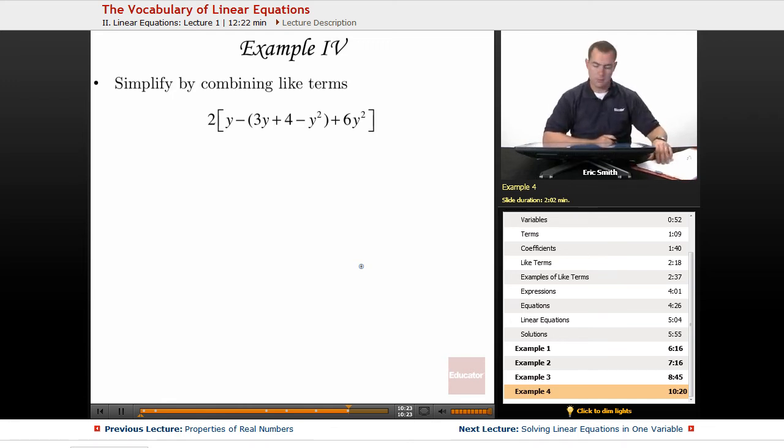Alright, on to example four. This one we want to simplify by combining like terms. I have lots of grouping symbols in here, so it's really hard to pick out what my like terms are. I think we can do it though, but we're going to have to borrow our distributive property first.